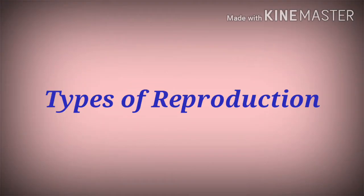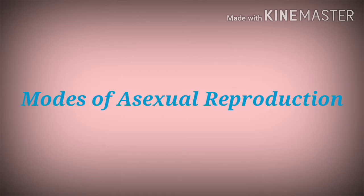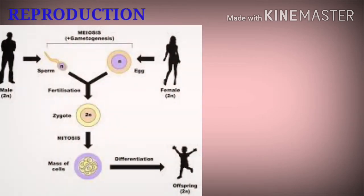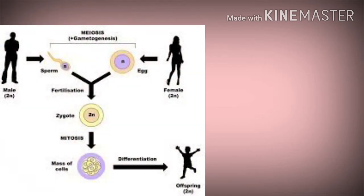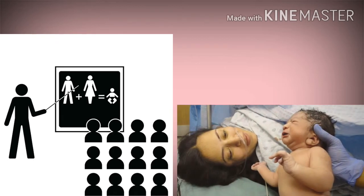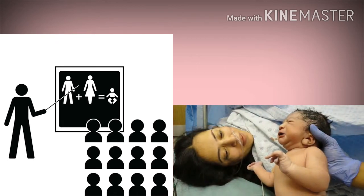This video explains about what is reproduction, types of reproduction, and modes of asexual reproduction. Reproduction is the process of formation of new individuals of a species from the pre-existing ones. The continuity of life on earth from its origin to the present day has been possible only because of reproduction. Hence it is the most important characteristic of living organisms.